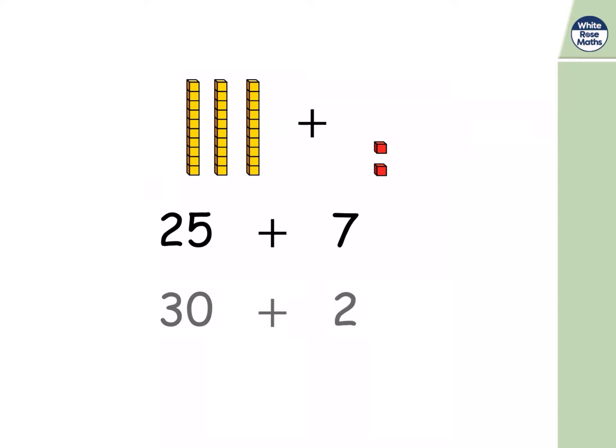Now, I've got thirty plus two. Really, I've partitioned my seven into five and two. And added the five to the twenty-five to make thirty. And there are two left over. Thirty plus two is equal to thirty-two. Just like twenty-five plus seven is equal to thirty-two.